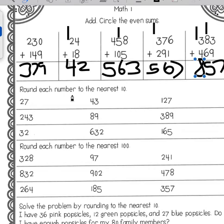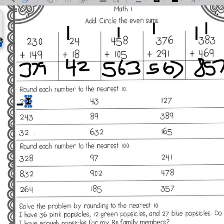On this part it wants us to round each number to the nearest ten. In this case we have a two in the tens place, so we need to look at the seven. The rule says if the number to the right of the rounding digit is five or greater, we're going to round up.